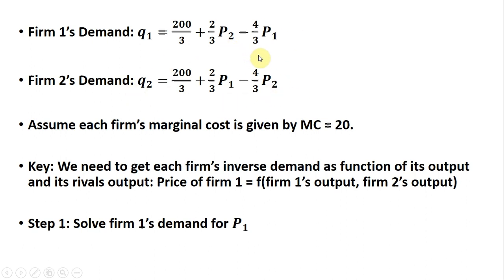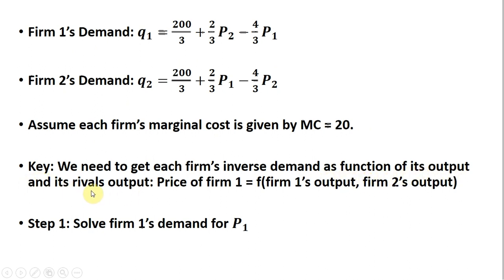You might have this setup if you're doing Bertrand competition with differentiated products, where you'd solve for the price each firm charges, their respective outputs, and so on. But what we want to do with this setup is find the Cournot outcome, which is a quantity competition model with differentiated products. We'll assume each firm has a constant marginal cost of $20. The key is we need to get each firm's inverse demand as a function of its own output and the rival firm's output.